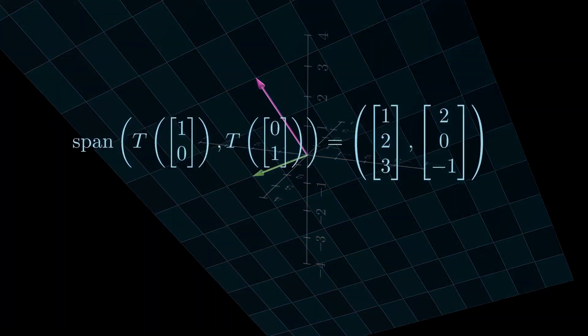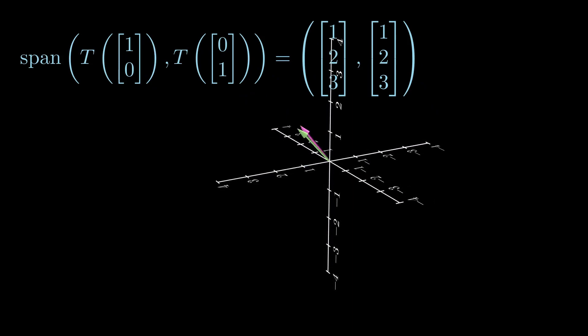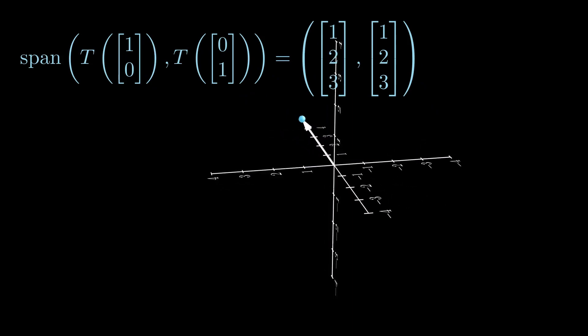It can be a line if, say, we assign both 1-0 and 0-1 to the same vector. Then their span is really just a one-dimensional line.